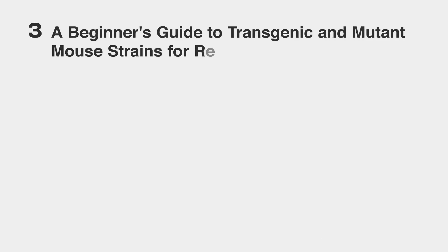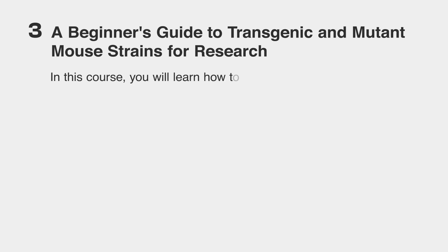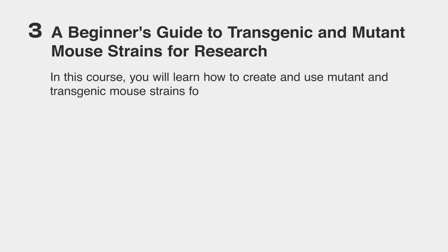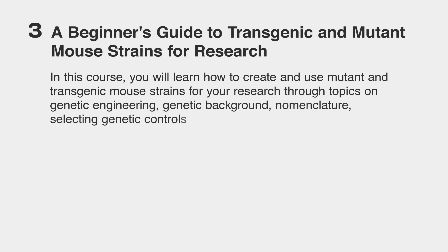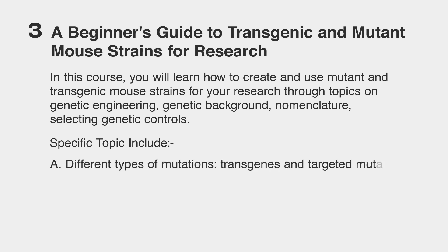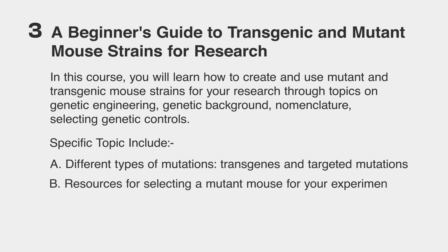Number three: a beginner's guide to transgenic and mutant mouse strains for research. In this course, you will learn how to create and use mutant and transgenic mouse strains for your research through topics on genetic engineering, genetic background, nomenclature, selecting genetic controls, and different types of mutations including transgenes and targeted mutations. You will also learn about resources for selecting a mutant mouse for your experimental plan.